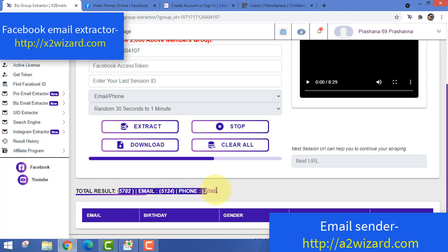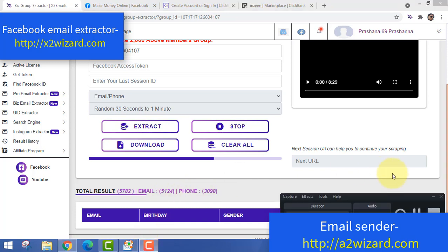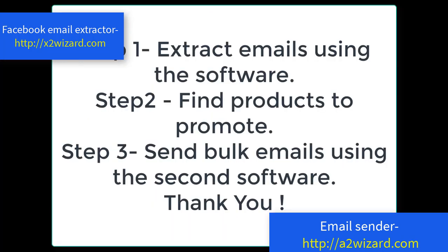I came back and you can see the results appeared after just a few minutes. After 20 minutes you can consistently get more than 10,000 emails — sometimes up to 20,000 — though some extractions take half an hour or an hour. That's it! To summarize: Step 1 — extract emails; Step 2 — find products to promote; Step 3 — send emails using the bulk email sender software.